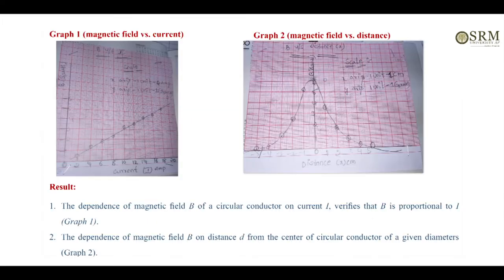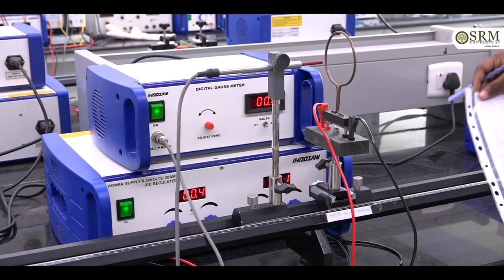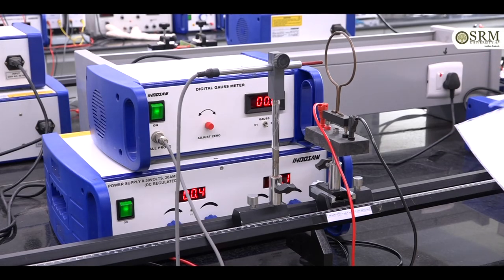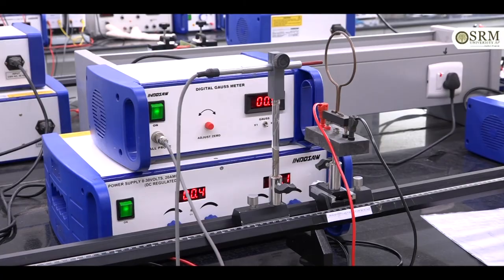After that, plot the graph between magnetic field and current, and magnetic field and distance. We will get a straight line for magnetic field versus current, and a parabola for magnetic field versus distance. That means the magnetic field is directly proportional to current and inversely proportional to distance. This is the proof of Biot-Savart's law.